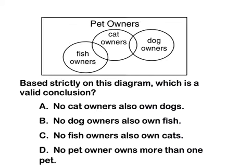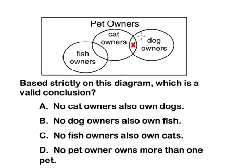A — what does A say? No cat owners also own dogs. Well, what that's telling me is this bubble here of cat owners must not be sharing any space with dog owners. But look, I see it right here. So yeah, some cat owners also own dogs. So no, that's wrong.